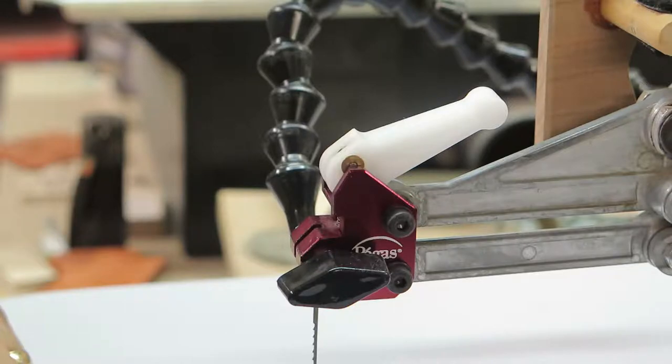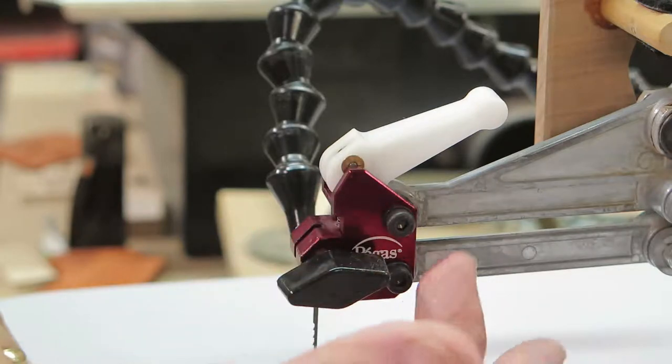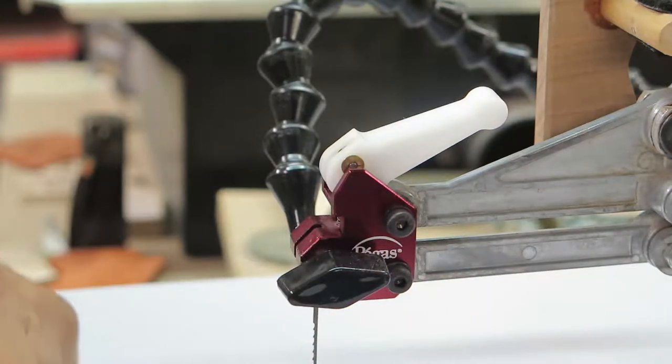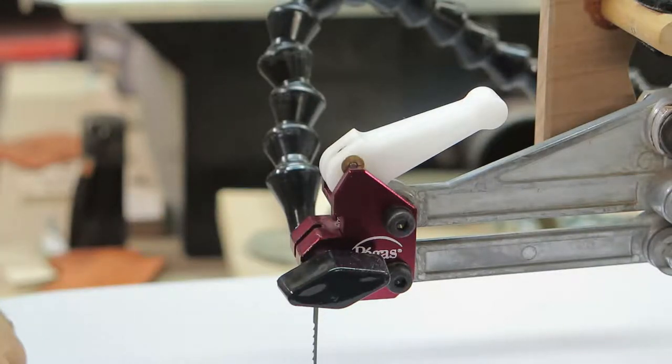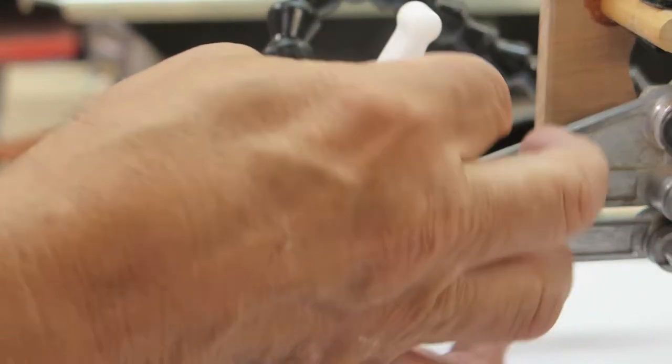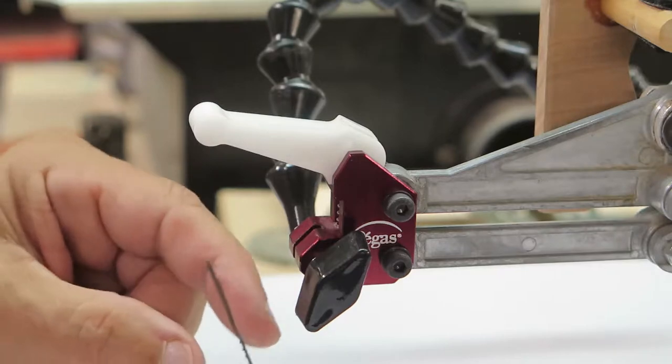If you haven't got one of these for your scroll saw yet, you might want to think about it. I find it very easy to use and very easy to install. It's a matter of taking out a couple of screws and bolts with the old one and taking it out, and the new one fastens on just about the same way. I find that putting the blade in